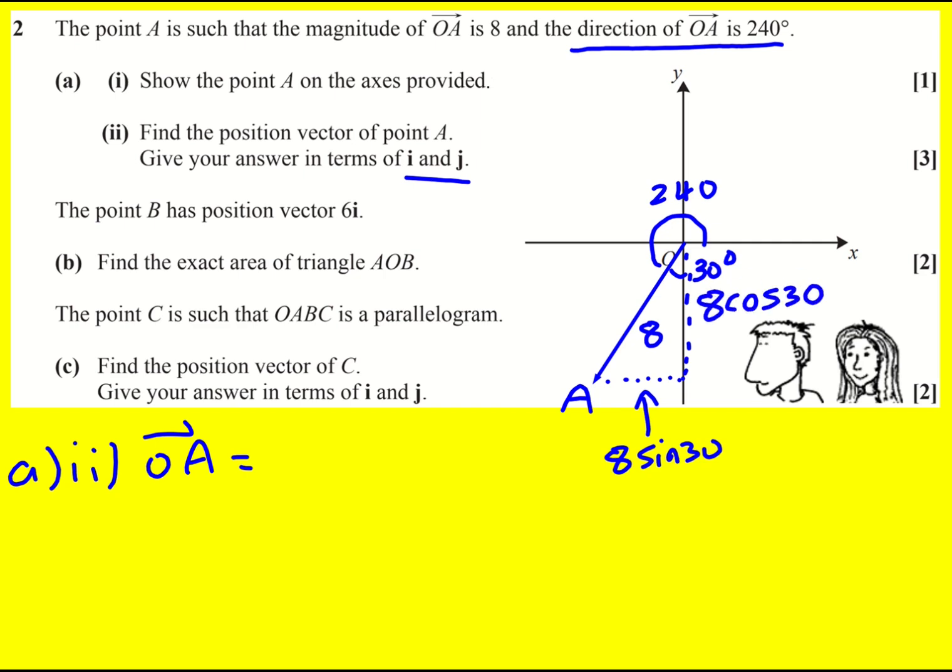In a similar way, this side is going to be 8 cos 30. Sine 30 is actually a half, so it's going to be 4, and cos 30 is root 3 over 2, so this is going to be 4 root 3.